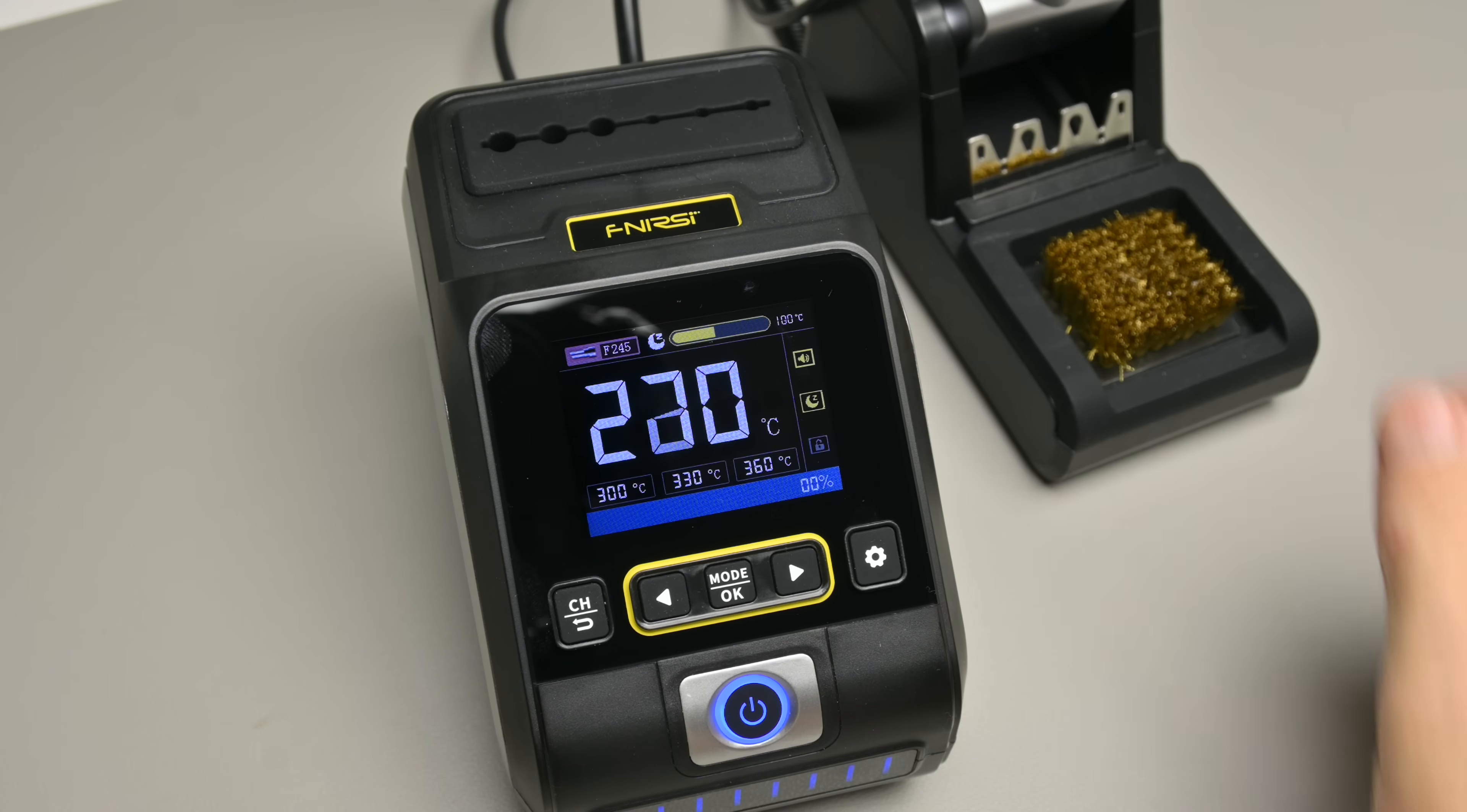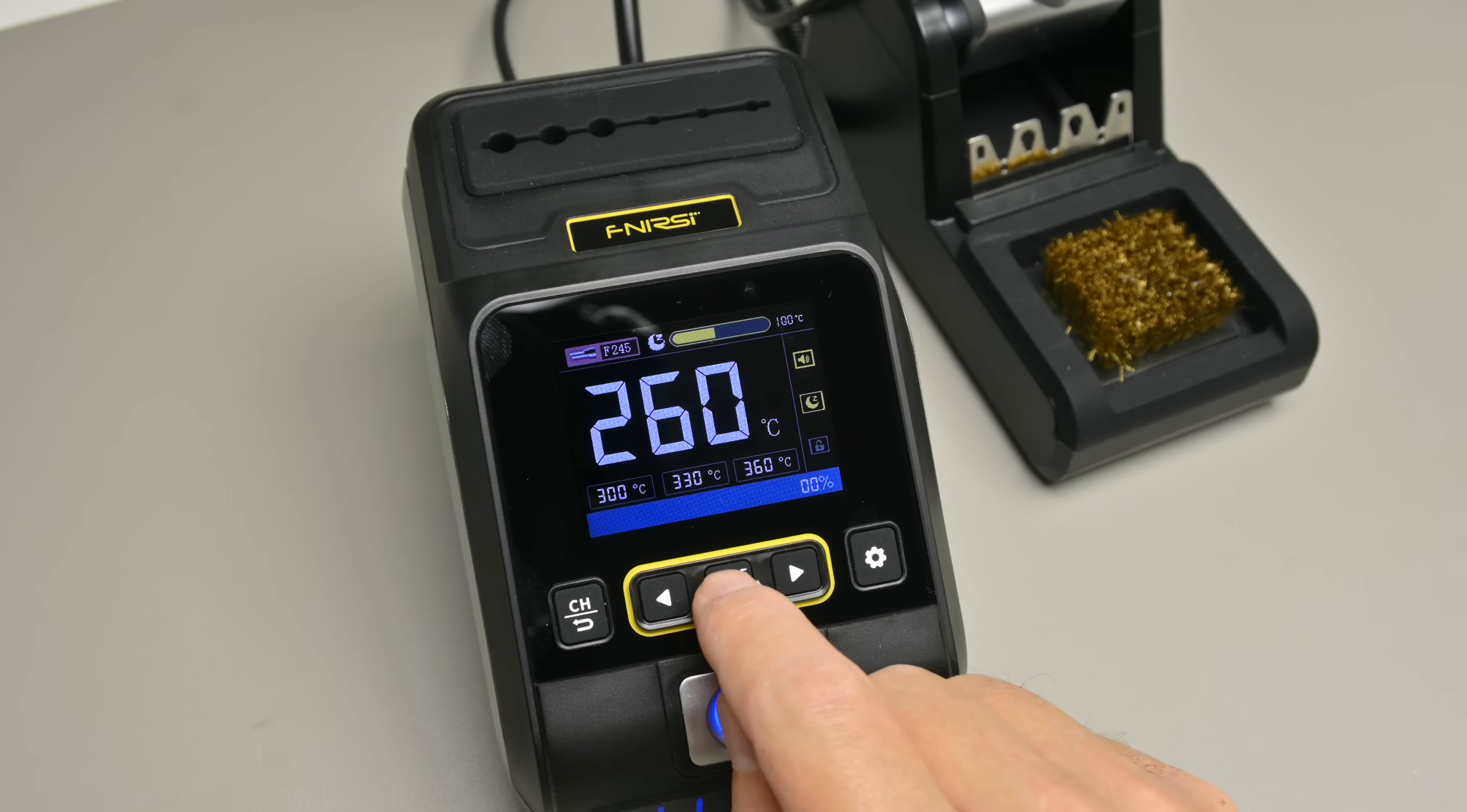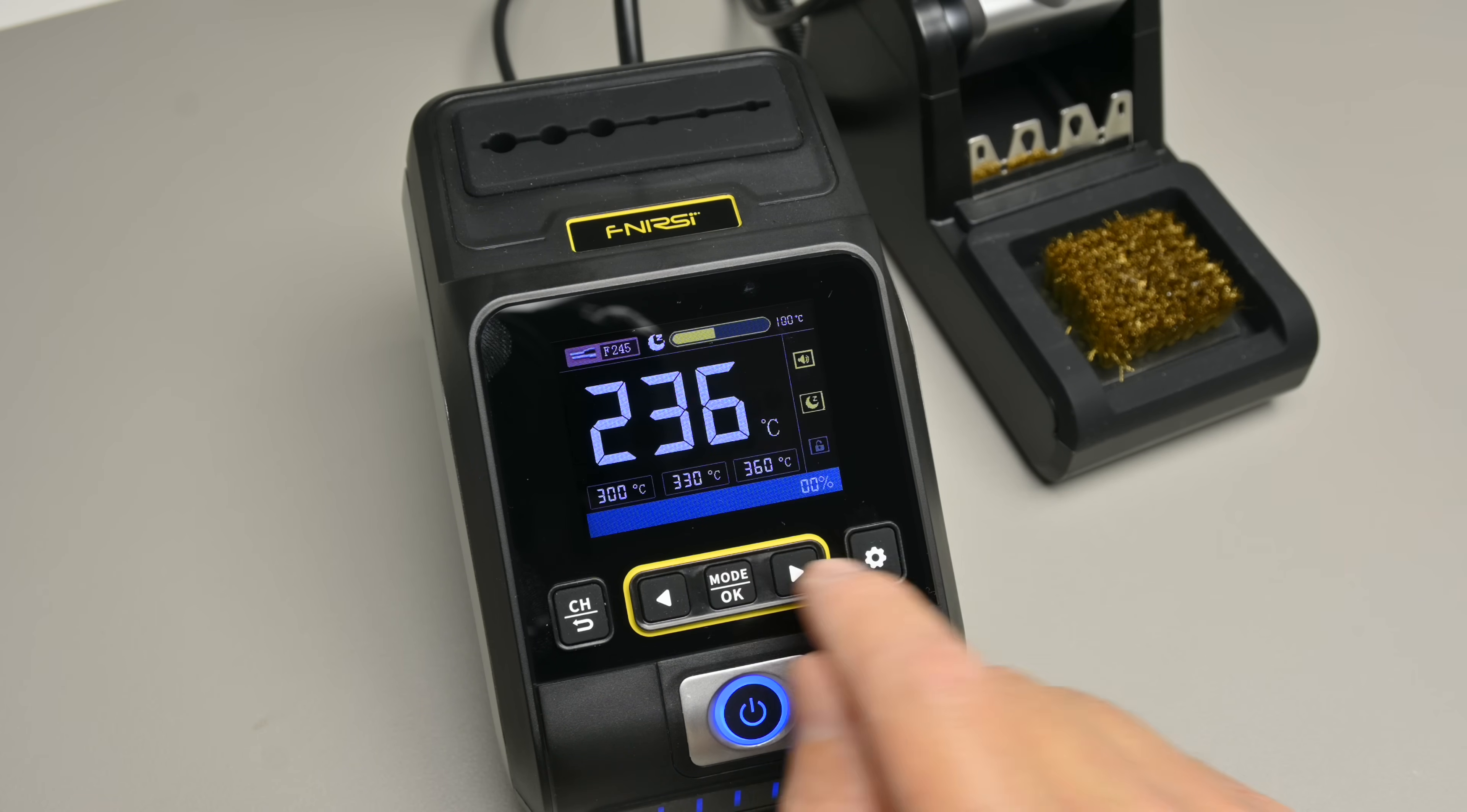There are three temperature presets that you can of course adjust, and on the display it shows you all the important information: the current temperature, how much power it is using, and you can also display a graph of the temperature over time.